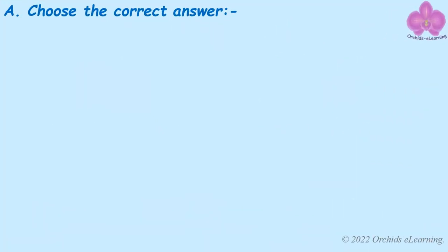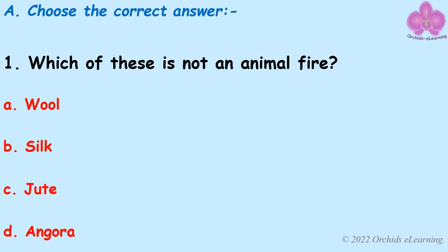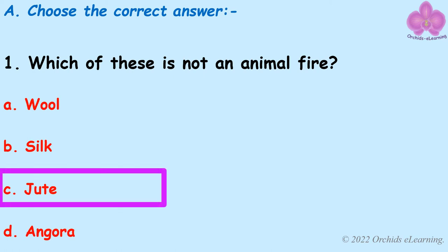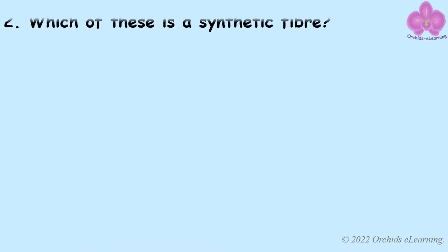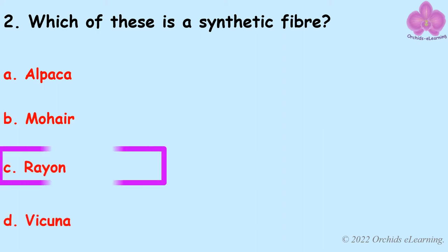Choose the correct answer. Which of these is not an animal fiber? The answer is C: Jute. Which of these is a synthetic fiber? The answer is C: Rayon.